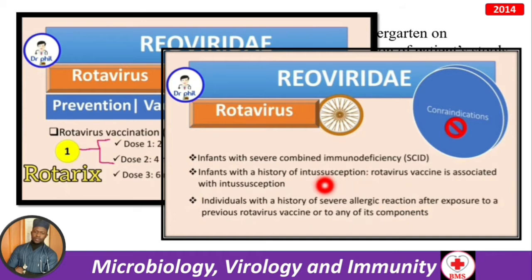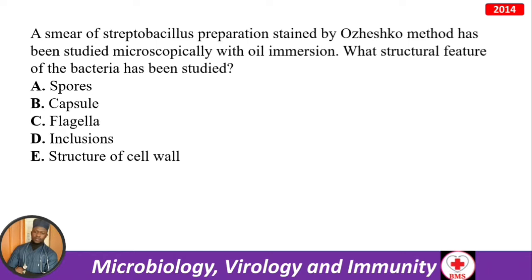The rotavirus vaccine is contraindicated in infants with severe combined immunodeficiency, infants with a history of intussusception (because the vaccine is associated with intussusception), and individuals with a history of severe allergic reaction after exposure to a previous rotavirus vaccine or any of its components.